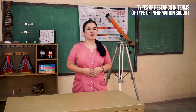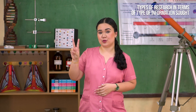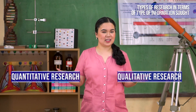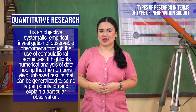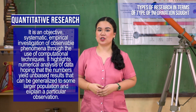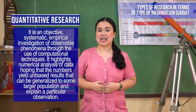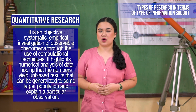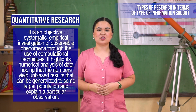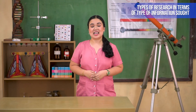Finally, let us now have the types of research in terms of type of information sought. Under this viewpoint, we have two: quantitative and qualitative research. Quantitative research is an objective, systematic, empirical investigation of observable phenomena through the use of computational techniques. It highlights numerical analysis of data hoping that the numbers yield unbiased results that can be generalized to some larger population and explain a particular observation.